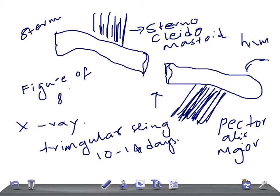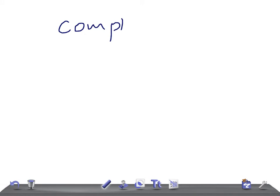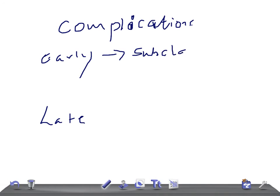Let's talk about complications. There are two types: early and late. The early complication is that the fractured segment of the clavicle can injure the subclavian vessels or brachial plexus.